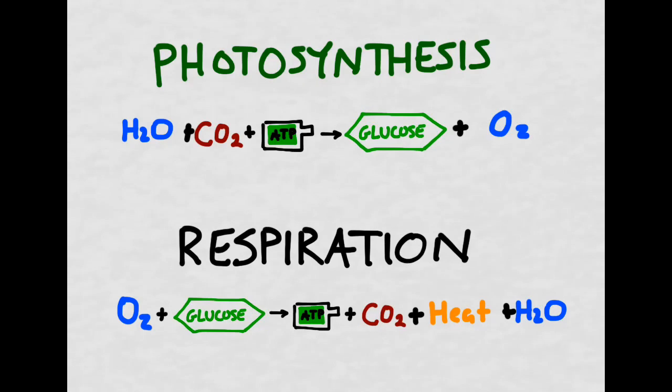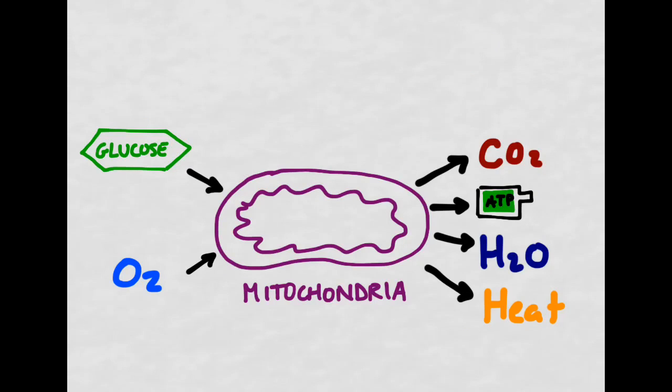So you're going to want to keep these two equations in mind as we go through respiration. Respiration is also different from photosynthesis in that it occurs mostly in the mitochondria of the cell, rather than in the chloroplasts. Both plant and animal cells have mitochondria, which is the major site of respiration.